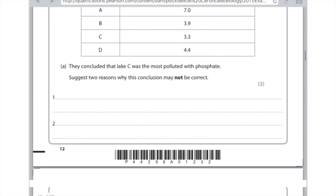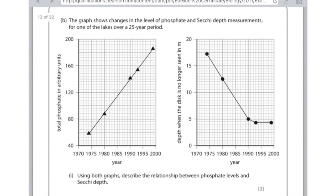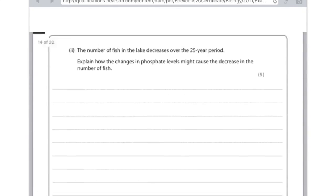The graph shows changes in the level of phosphate and Secchi depth measurements for one of the lakes over a 25-year period. Using both graphs, describe the relationship between phosphate levels and Secchi depth. From both graphs, we can see as the level of phosphate increases, the Secchi depth decreases. You can talk about the Secchi depth levels from 1990 being about five meters.